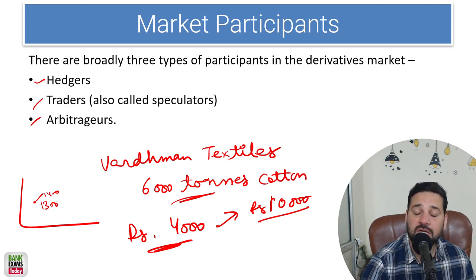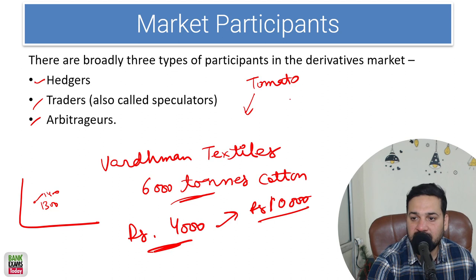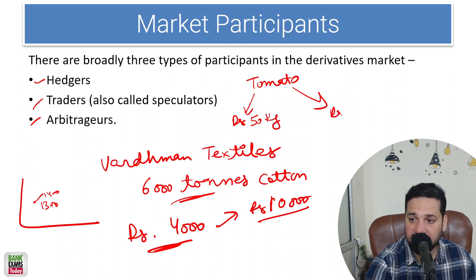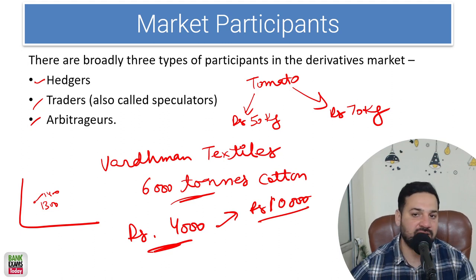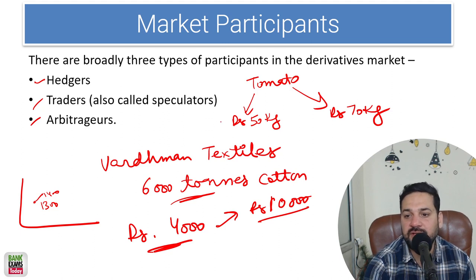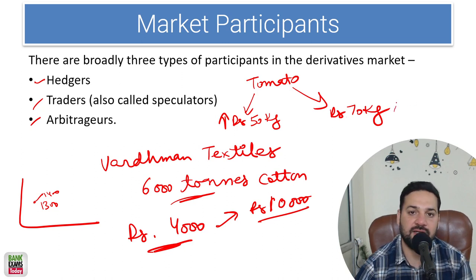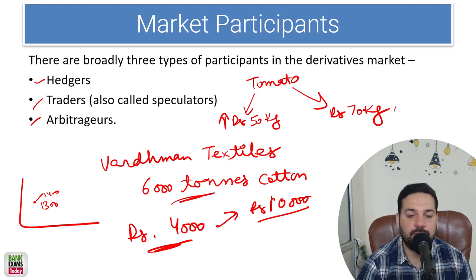Arbitrators: for example, the price of tomatoes in two markets in your city — in one market it's 50 rupees per kg and in the second market it's 70 rupees per kg. People are going to buy at 50 rupees and sell in another market for 70 rupees, adjusting for transportation charges. Eventually there will be high demand where tomatoes are 50 rupees and high supply where they are 70 rupees, and the prices become almost equal. That process is called arbitrage.